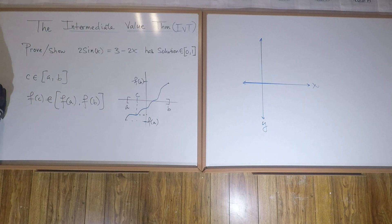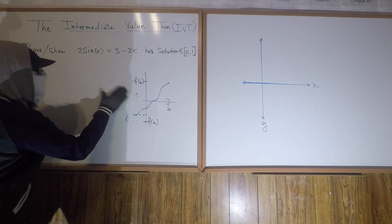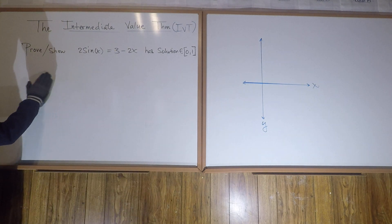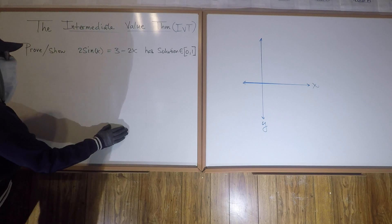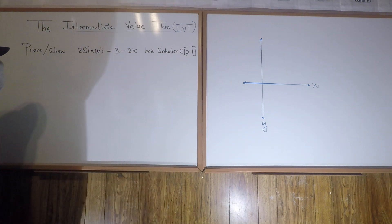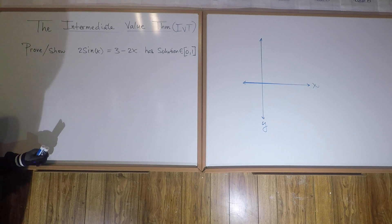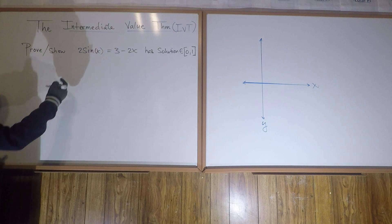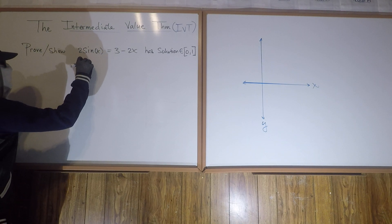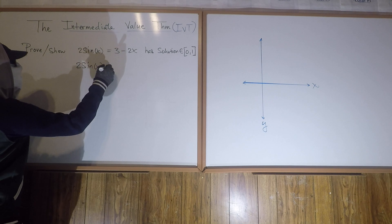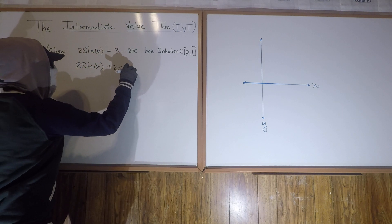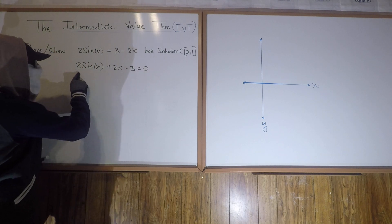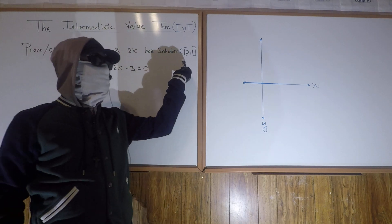How does this apply in this specific problem? What we're asked to show is that 2sin(x) = 3 - 2x in the interval [0, 1]. We can turn it into a statement about equaling 0. Specifically, we can write this given equation in an equivalent form: 2sin(x) + 2x - 3 = 0. So we're saying that this here crosses the x-axis at some point between 0 and 1.